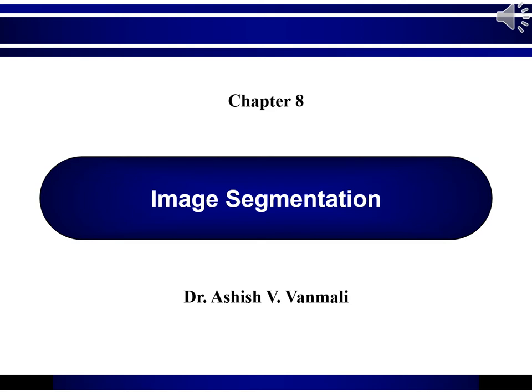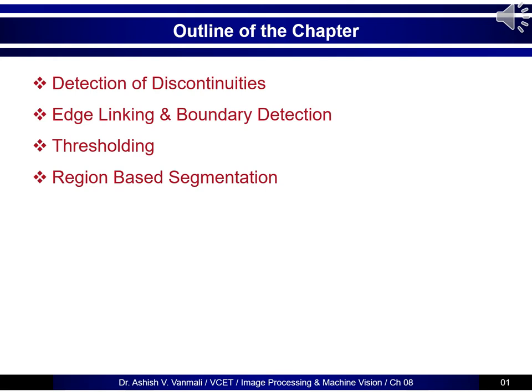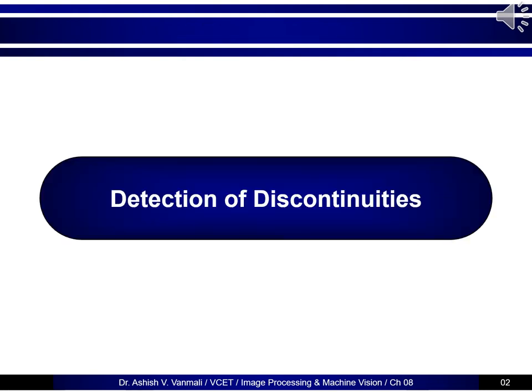Hello everyone, this is Dr. Arshi Shonmai and welcome to Chapter 8, i.e. Image Segmentation. This is Part 1 of this video series. This is the brief outline of the chapter. We will first see detection of different types of discontinuities, then some algorithms for edge linking and boundary detection, which will be followed by thresholding and region-based segmentation. Let's start with the first part: different types of discontinuities and how to detect them.